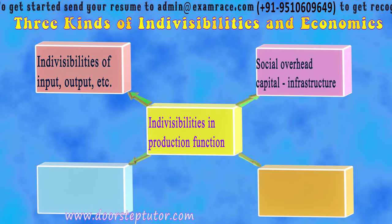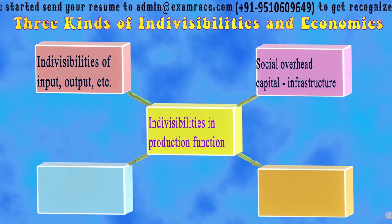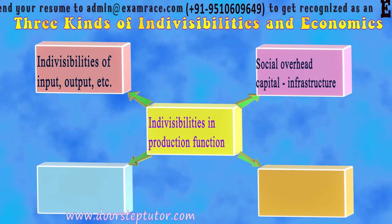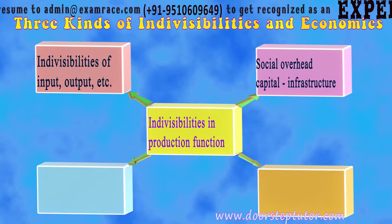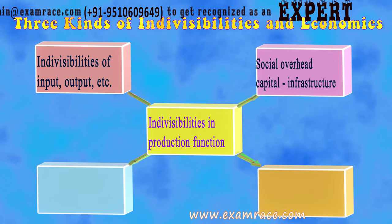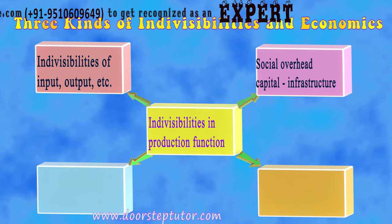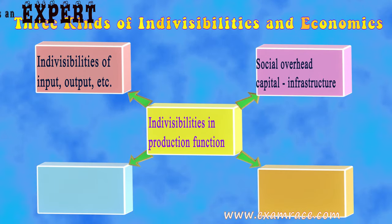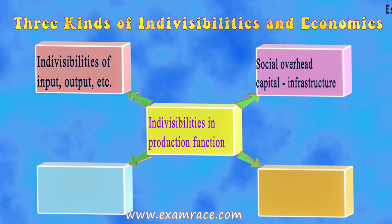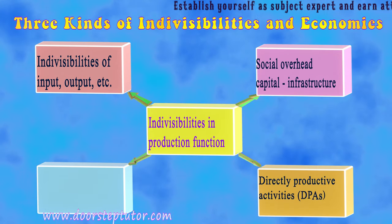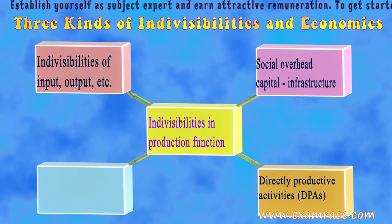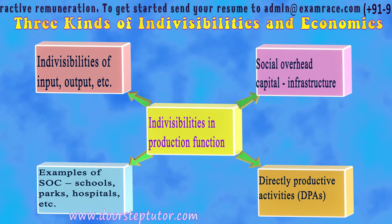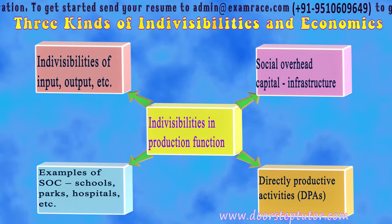The next important concept is social overhead capital, which has been given more importance in this theory because economies arising from it are very significant. Social overhead capital is essentially infrastructure, and includes production of infrastructure such as power, transport, communication, and public transport services with heavy investment in directly productive activities. Examples of social overhead capital include schools, parks, and hospitals.